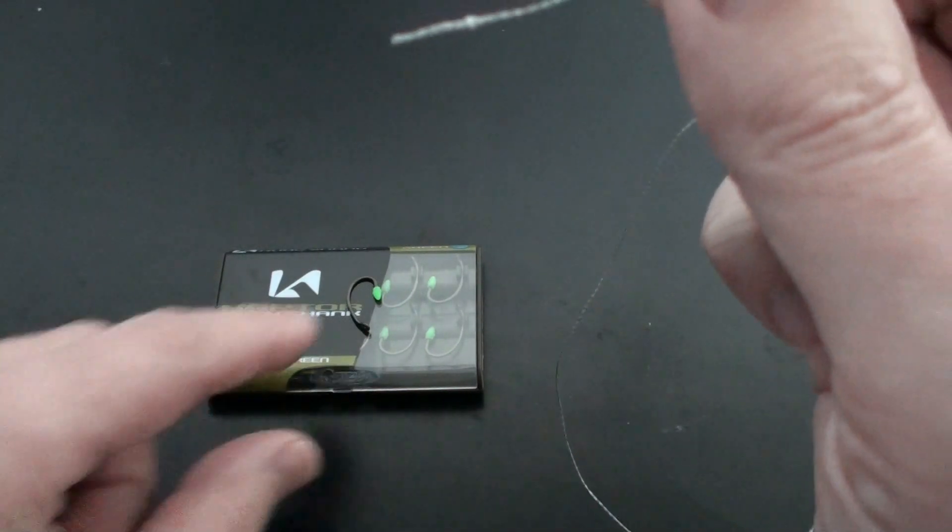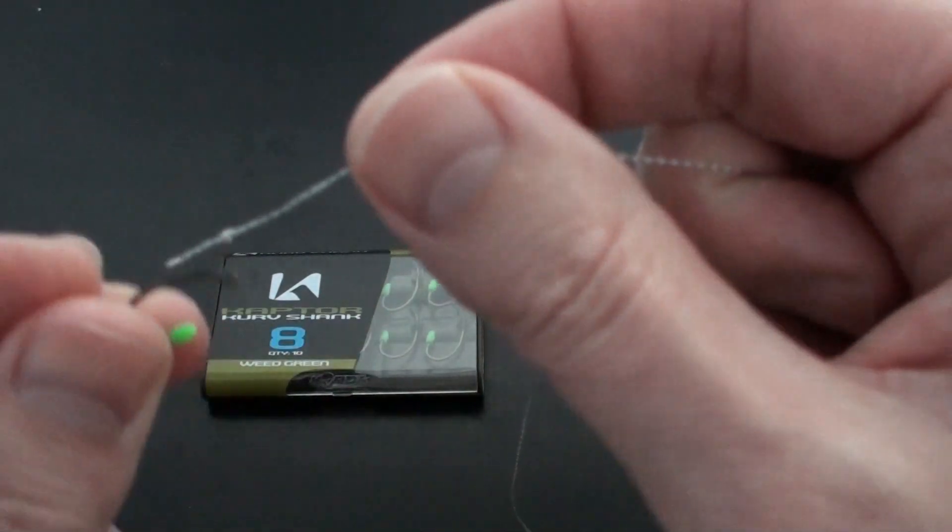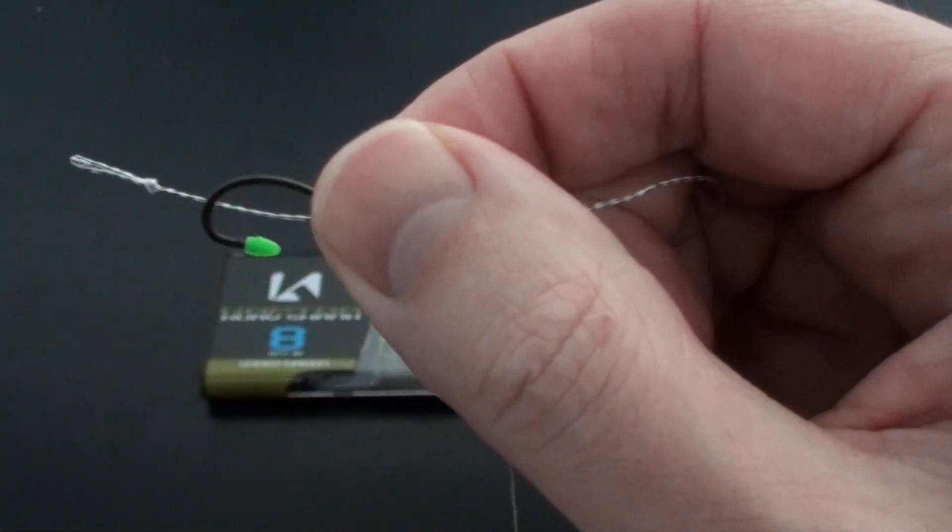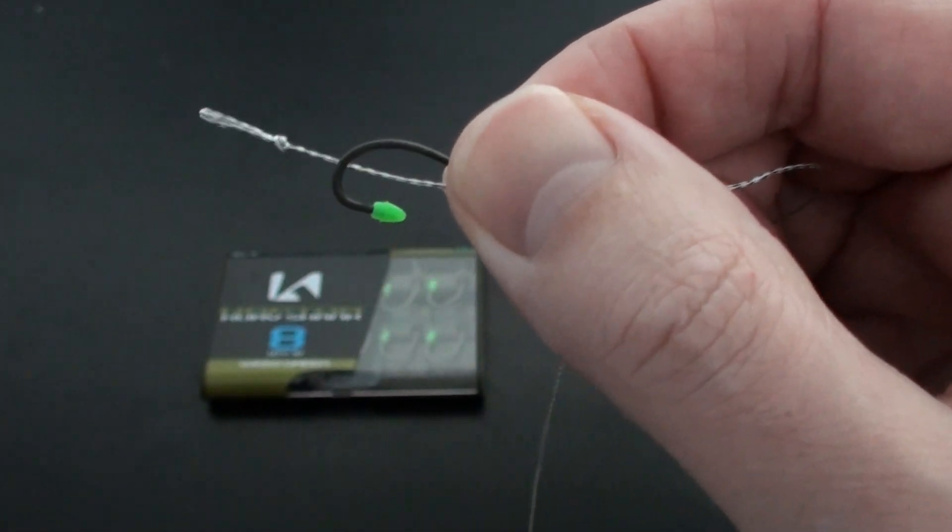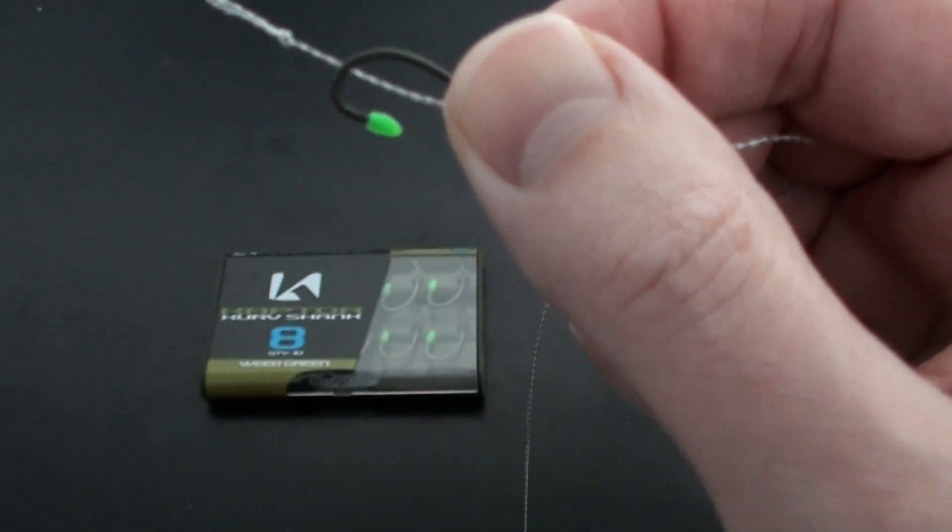So the first thing we do is take our hook, which in this case is a size 8 curved shank hook. Very good hook but obviously you can use any type of hook.